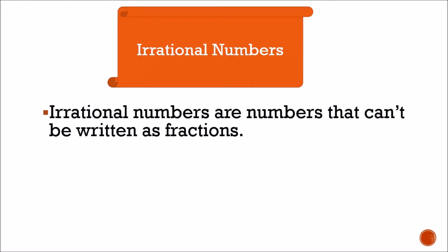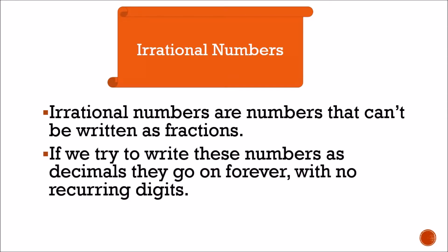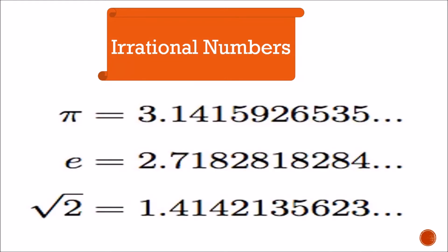Next is irrational numbers. Irrational numbers are numbers that can't be written as fractions. If we try to write these numbers as decimals, they go on forever with no recurring digits. Examples are root 2 and pi. The value of pi is 3.1415926535 and so on — these are numbers which are not recurring; they go on forever.